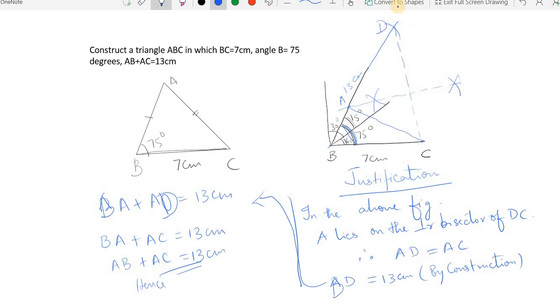So which is what has been given in the problem. So we have proved that AB plus AC is 13 centimeters. Hope you understood. If you have any doubts you can always message me.